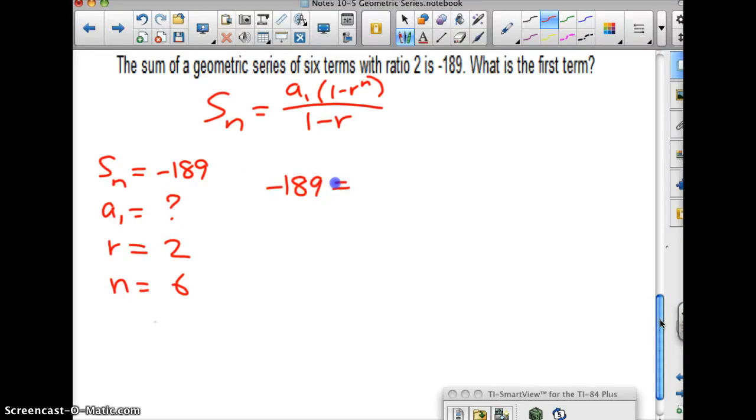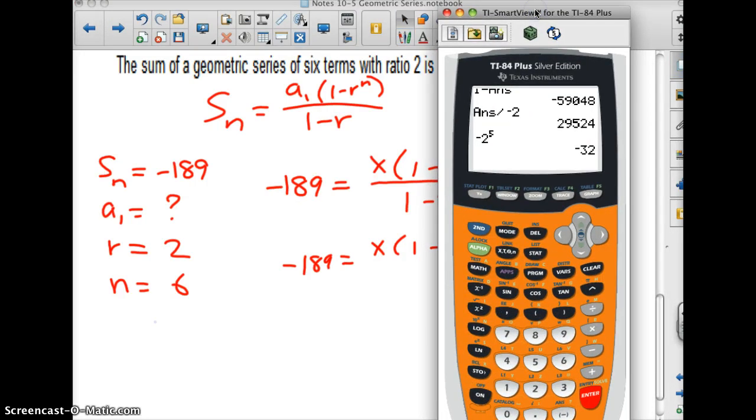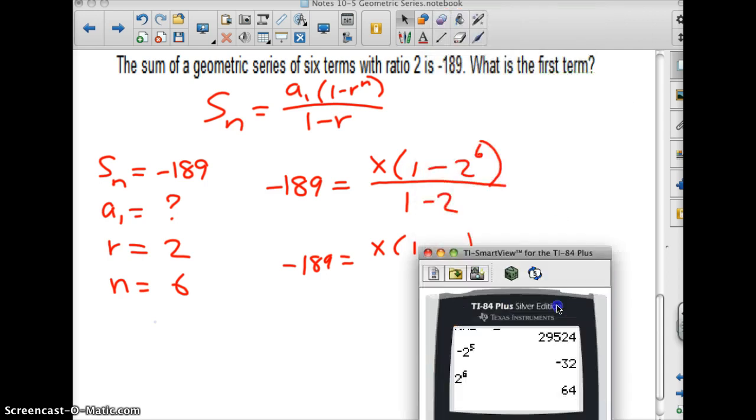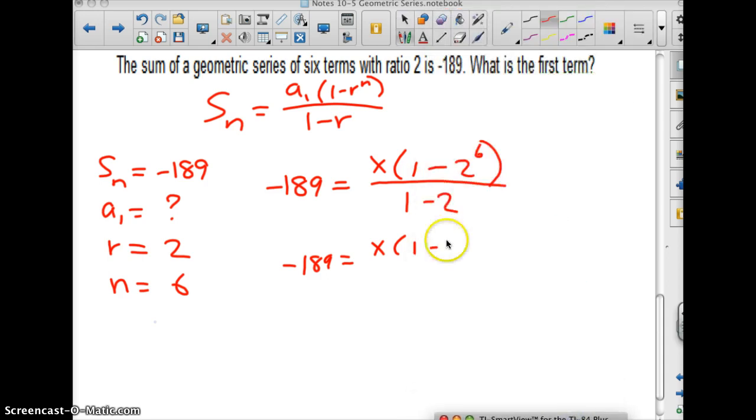So this is my unknown. So really I can just do negative 189 equals, and a sub 1 is what I'm trying to find. I'll put x in there. I can leave a sub 1 if I wanted. 1 minus, what goes in for r? 2. What goes in for n? 6 over 1 minus 2. So I have negative 189 equals x times 1 minus 2 to the 6th. Well now 2 to the 6th is, I've got to be 64. 2 to the 6th is 64.